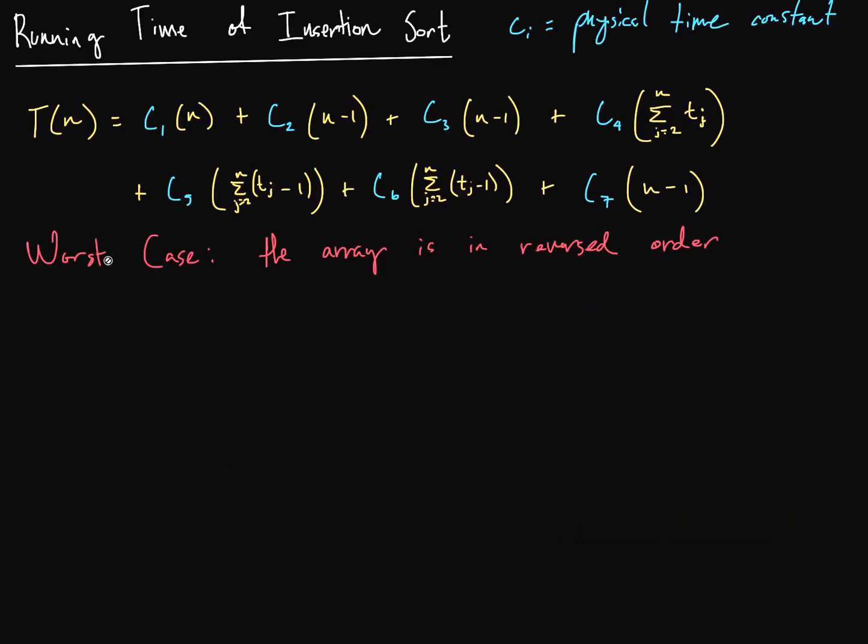Now, what about the worst case scenario? So our array is reversed in this scenario. So if we look at this, we can just plug things in like we did before. Right? T(n) is equal to, and we're going to just kind of combine these things again. We've got c1 times n plus, here we go, c2 plus c3 plus c7, right, times n minus 1, okay?